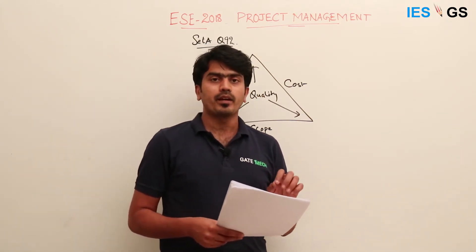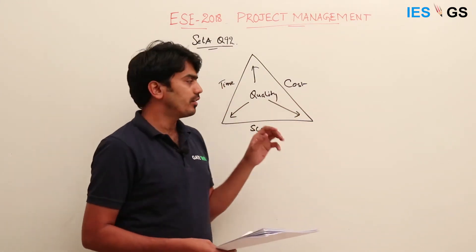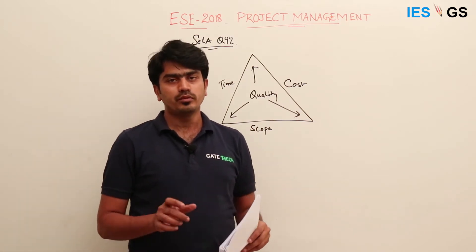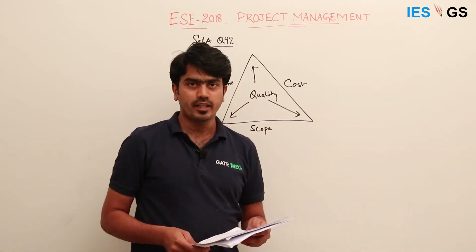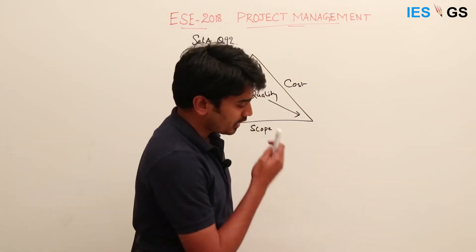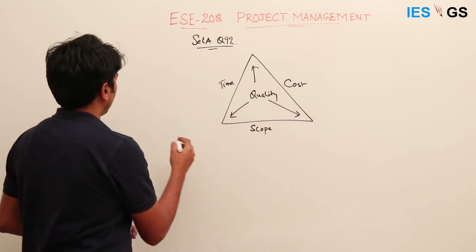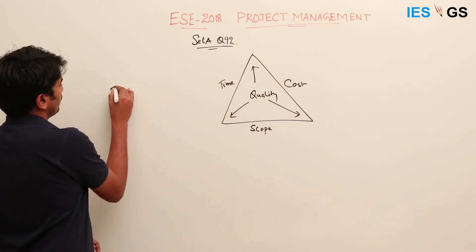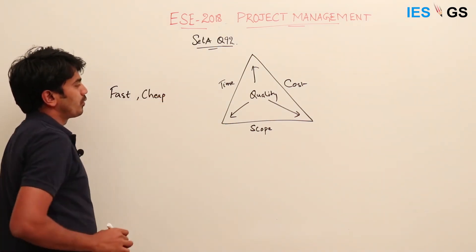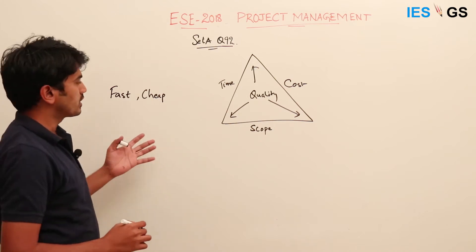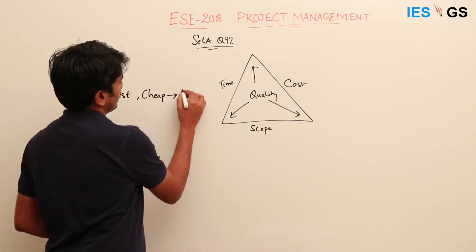Statement two says if two dimensions are fixed, the other two are constrained by these two. For example, if you do something very fast using cheap or low-skilled labour, you will get a product of low quality. Only two dimensions will determine the other two — that is what this statement is claiming.